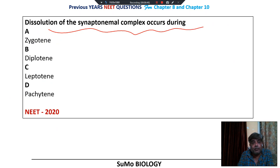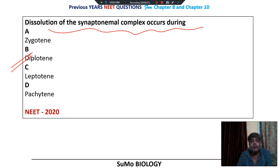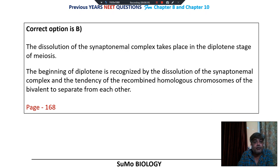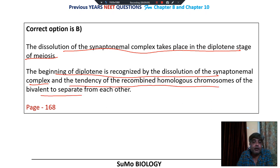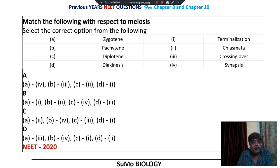Dissolution of the synaptonemal complex occurs during diplotene. The diplotene stage begins with the dissolution of the synaptonemal complex, so option number B is the right choice. The beginning of diplotene is recognized by dissolution of the synaptonemal complex and the tendency of recombined homologous chromosomes of the bivalent to separate from each other. Mentioned in NCERT on page number 168.